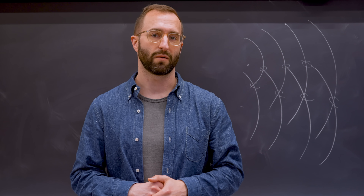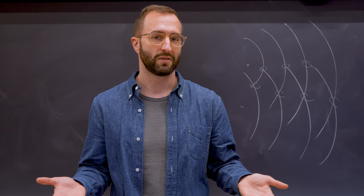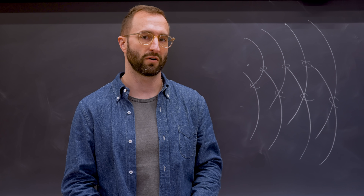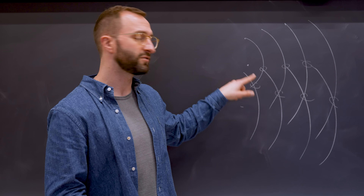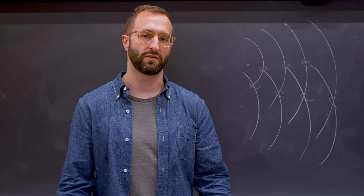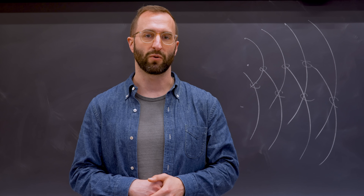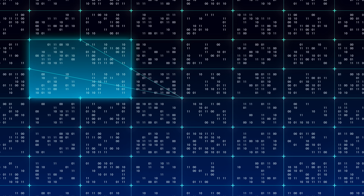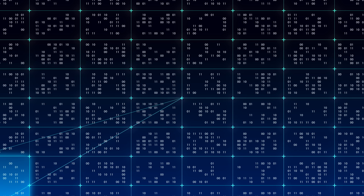Quantum interference sounds exotic, but you experience it all the time in the classical world. These scribbles behind me are actually trying to illustrate what happens when two sound waves interfere with one another. You can imagine there are two speakers here and here, and these curves are sound waves emanating from them. At the points where they overlap, in these circles, are points of interference. So depending on where you're sitting in this room, you might experience sound that is louder or quieter. In quantum mechanics, particles also have something called a quantum mechanical wave function, and this can operate in a similar way. In quantum computing, we use quantum interference to our advantage so that at the end of an algorithm, we use constructive interference to amplify the right answer.